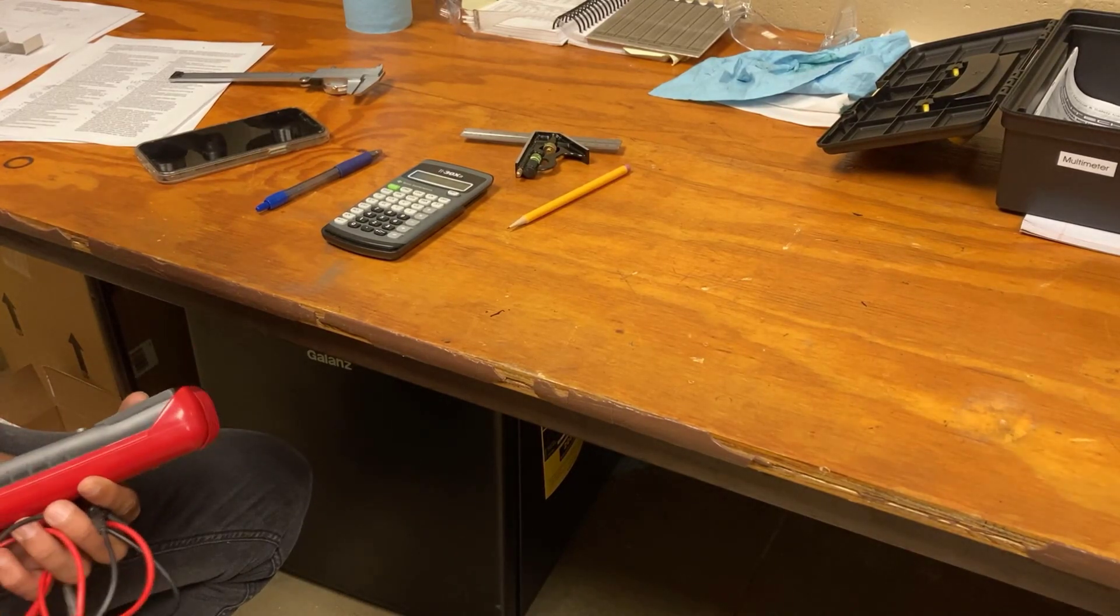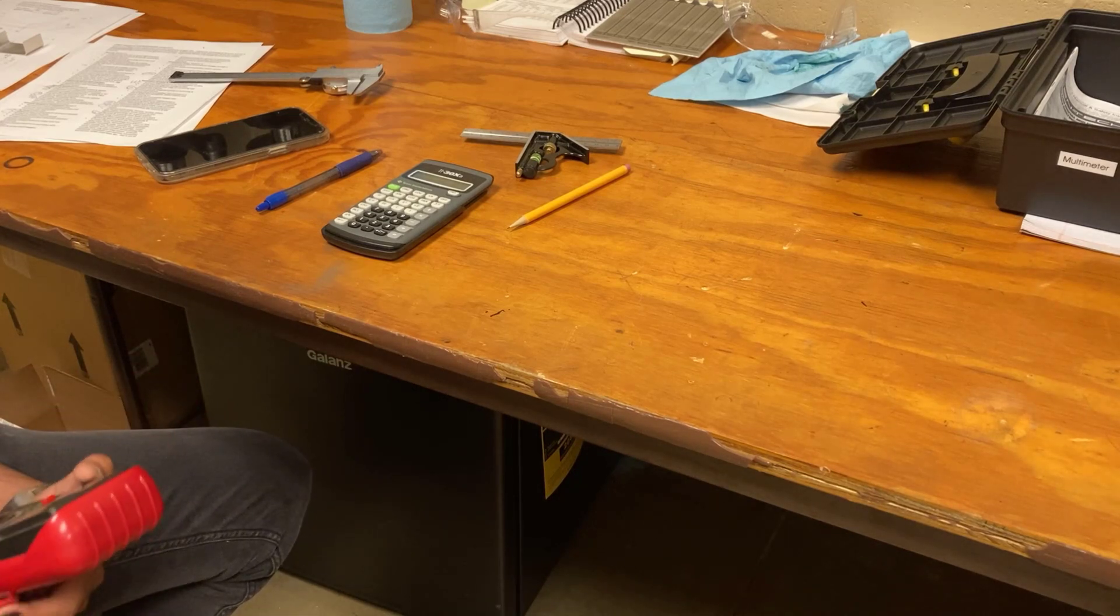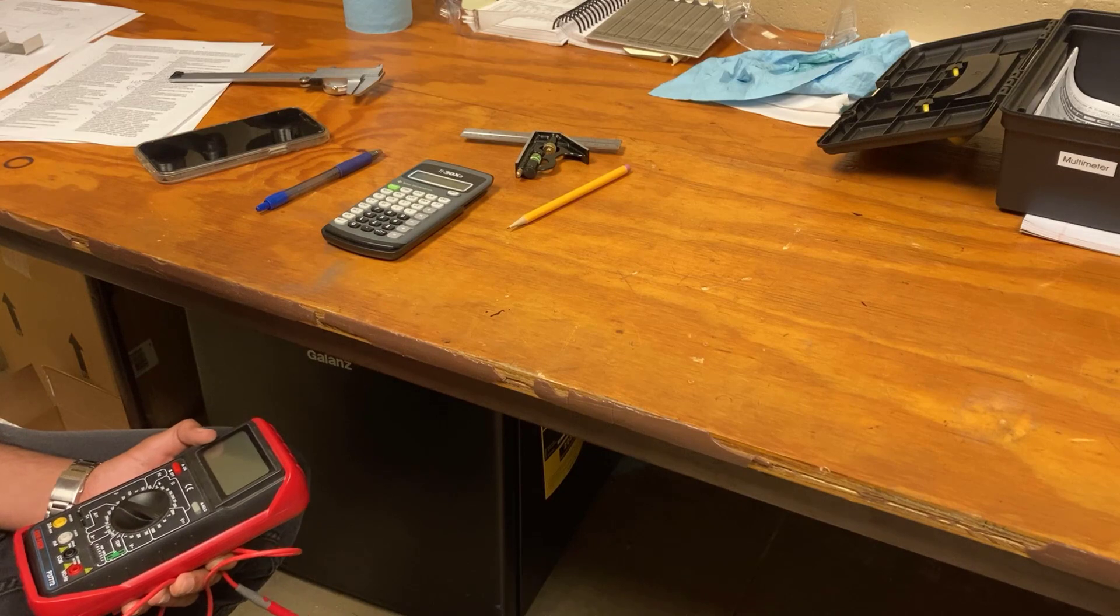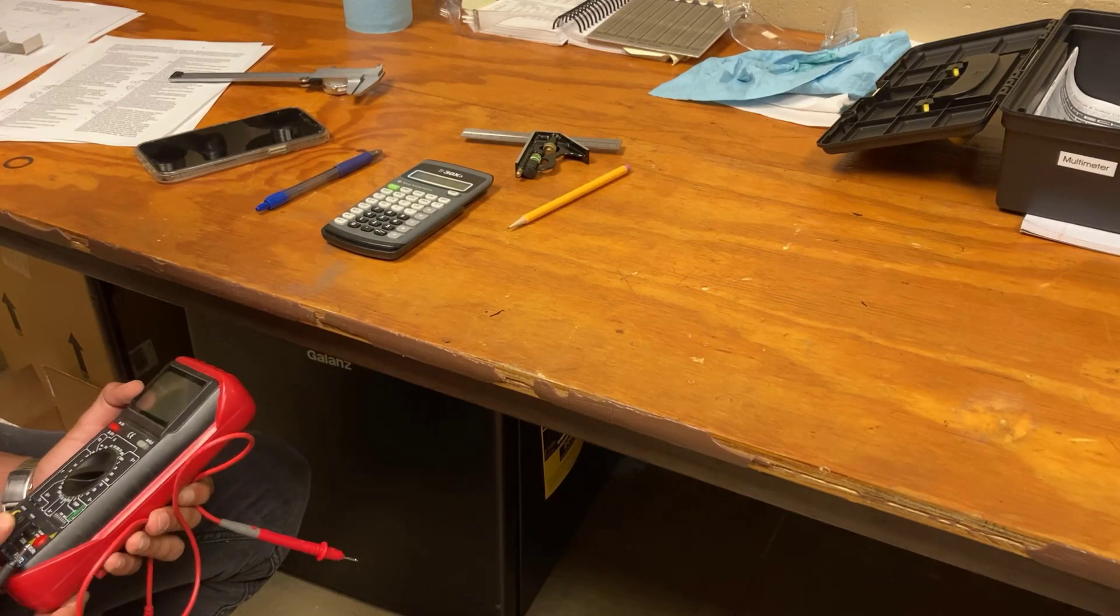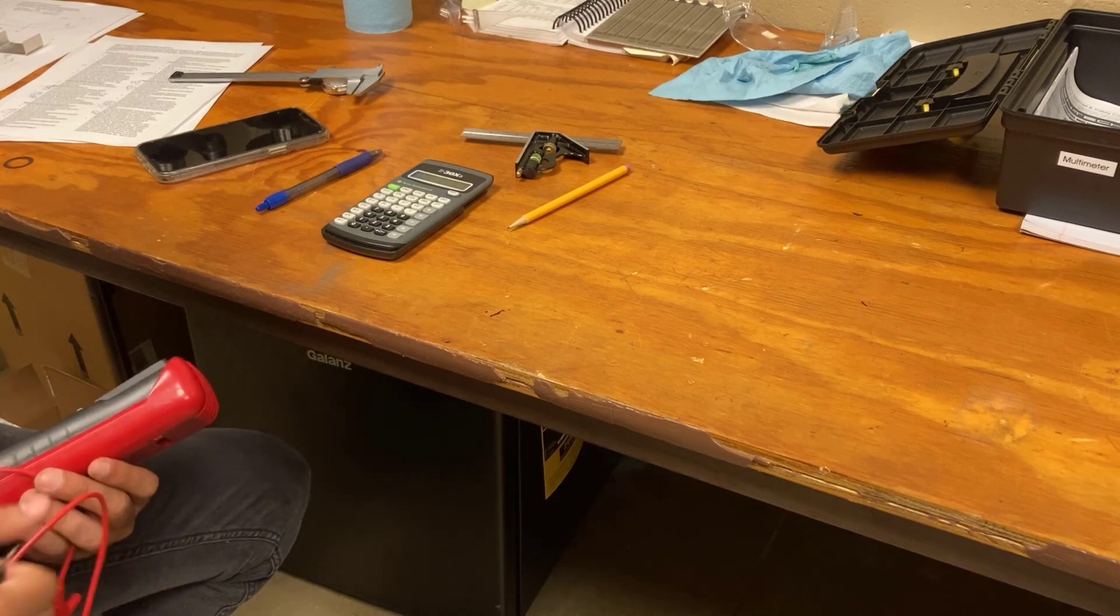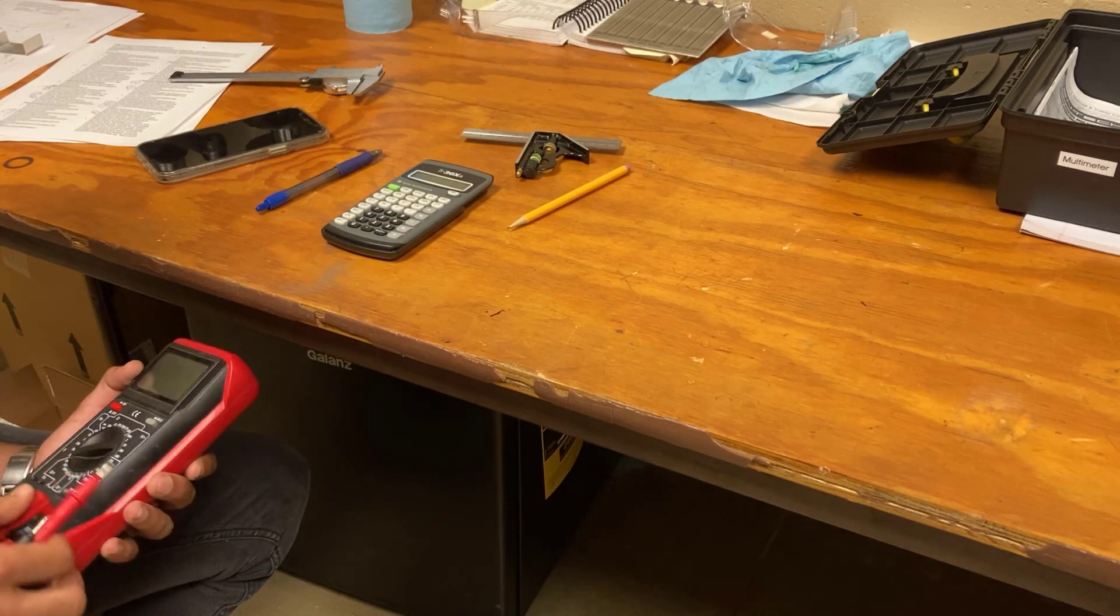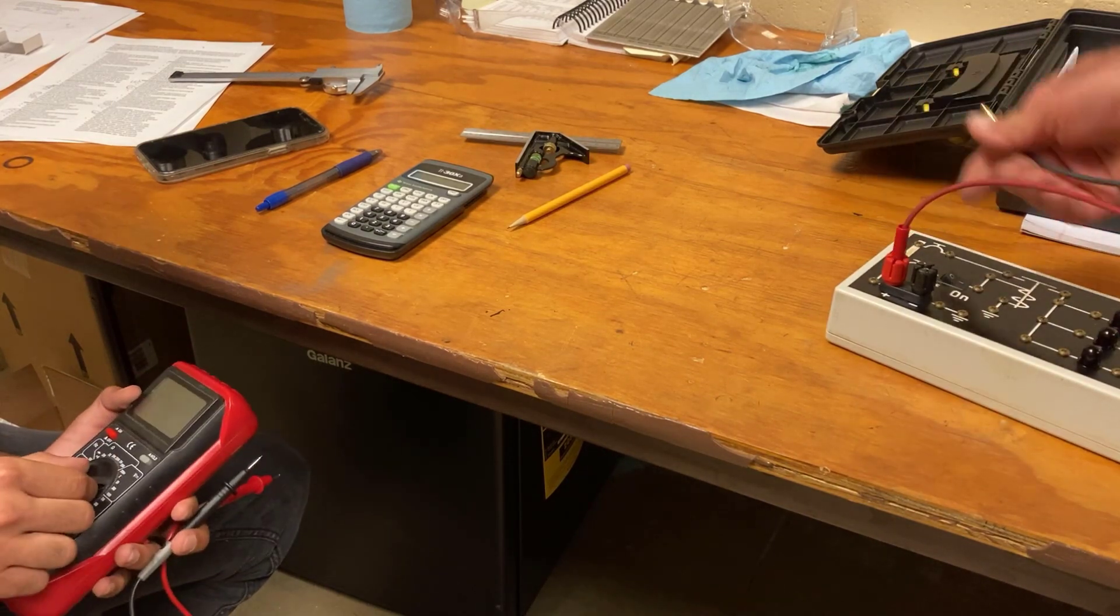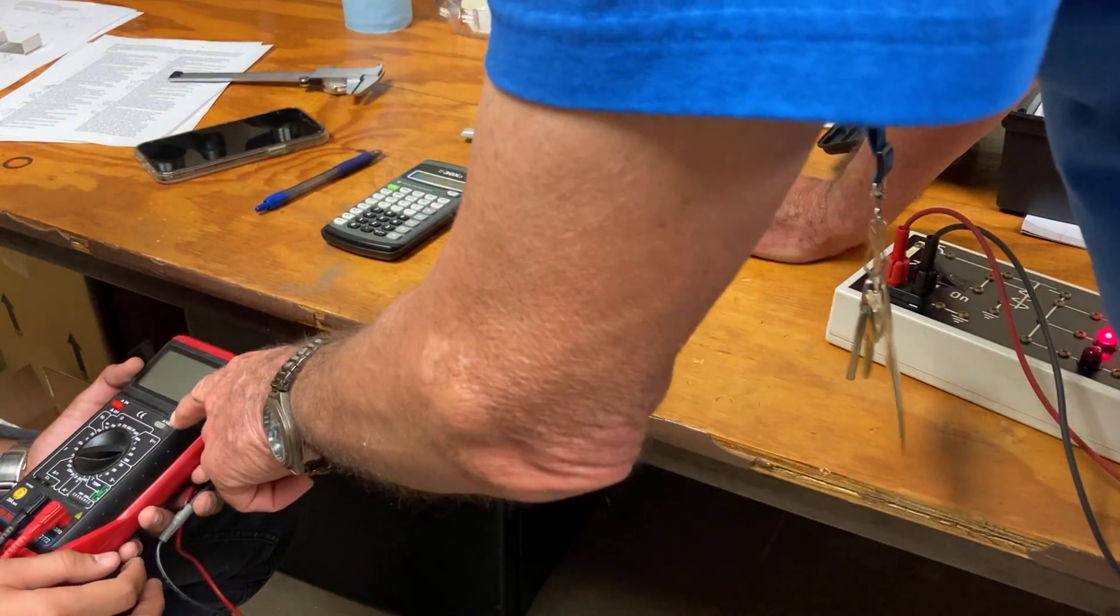So to check, to troubleshoot with a multimeter for opens and shorts, well opens in particular, you just want to use a voltage measurement. So you want to set that multimeter up to measure voltage. Yeah, DC volts.